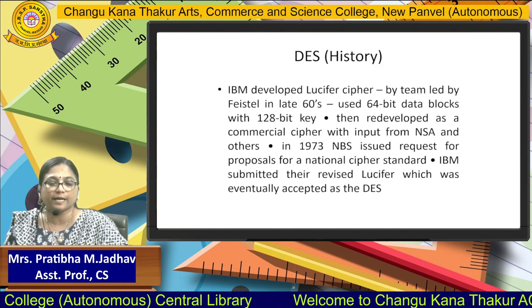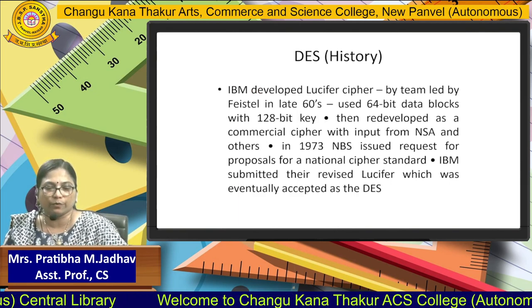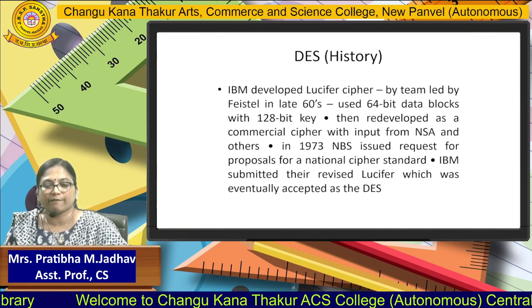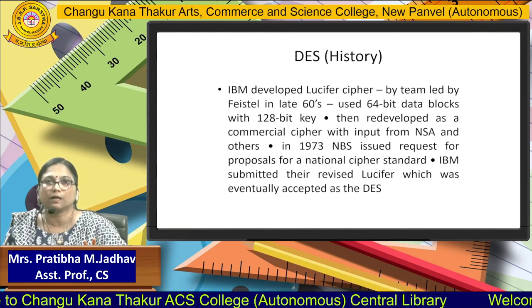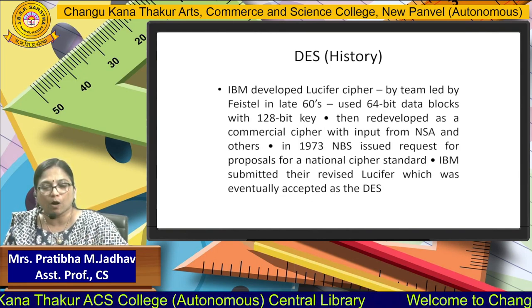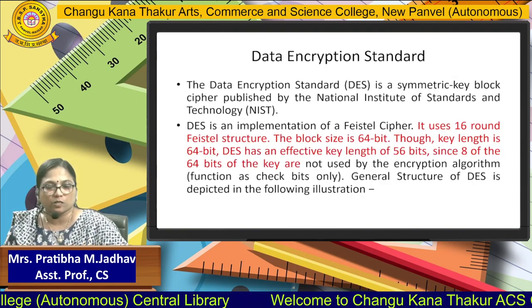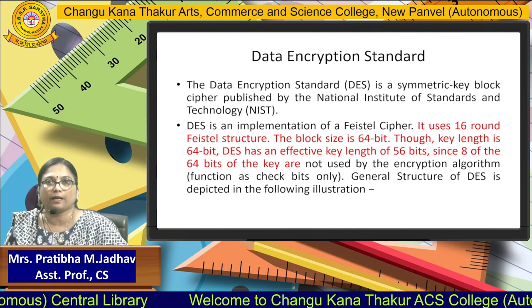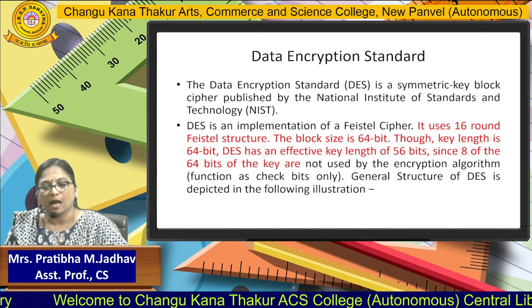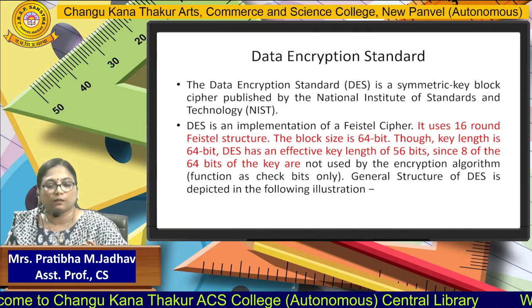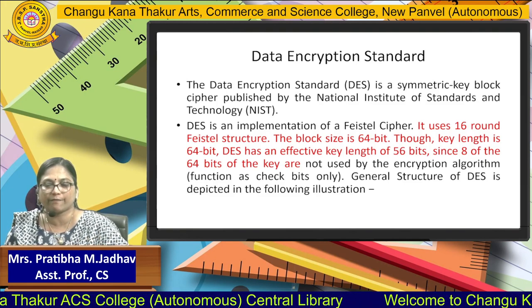We will now look at the DES algorithm and exactly what Feistel structure will be applied to it. IBM developed the Lucifer cipher in the late 1960s, having two main concepts: a 64-bit block and a 128-bit key. In the Data Encryption Standard, it is using the symmetric key — symmetric key means only one key will be used for both encryption and decryption.